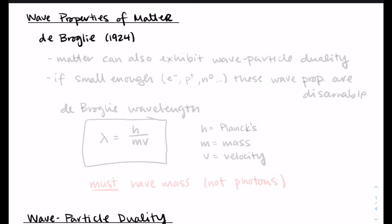So the scientist de Broglie in 1924 said that matter can also exhibit this wave-particle duality. Now, the problem is that you only discern this when the particles are small enough, so we don't observe wavelengths and frequencies for macroscopic objects. But for things like electrons, protons, and neutrons, we can observe things like wavelength for those objects.